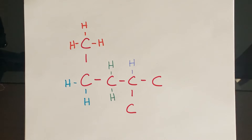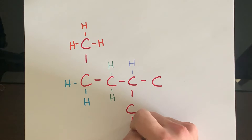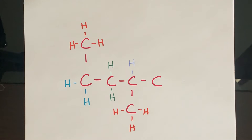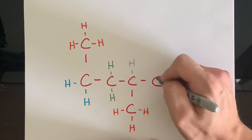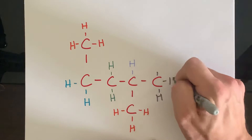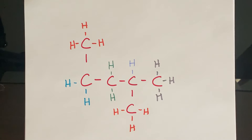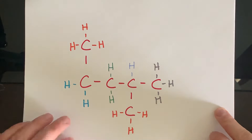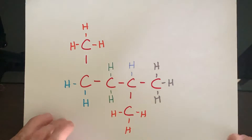Going down to carbon number five, we have only one bond, so we're going to have to add one, two, three hydrogens. And then the same thing goes with carbon number six — we have one bond there to carbon number four, so we're going to need one, two, three hydrogens in there. And there is another branched hydrocarbon — it is fully saturated with our hydrogens.